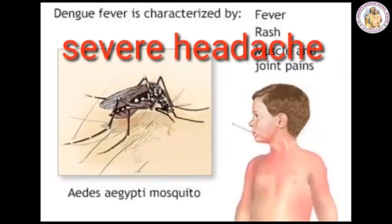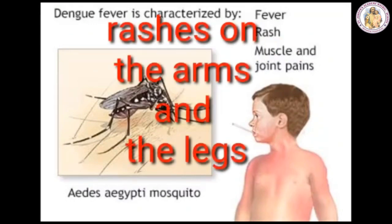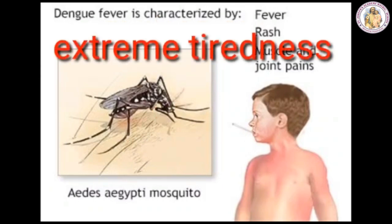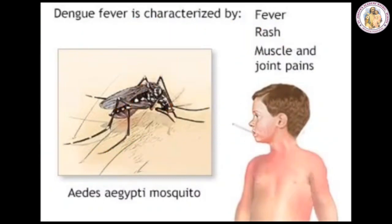Symptoms of dengue fever include: severe headache, rashes on the arms and the legs, extreme tiredness, and sudden onset of fever that lasts 3 to 7 days.